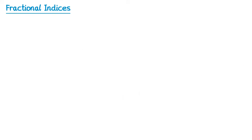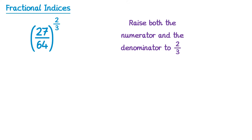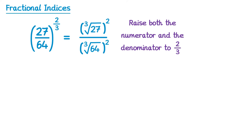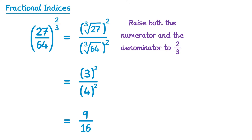Sometimes you may face questions that are a bit harder, like a fraction raised to the power 2 thirds. We know 2 thirds means we do the cube root and then square it. All we do here is raise both the numerator and the denominator to the power 2 thirds. On the top: 27 to the power 2 thirds — cube root of 27 is 3, then 3 squared is 9. On the bottom: 64 to the power 2 thirds — cube root of 64 is 4, then 4 squared is 16. So the answer is 9 over 16.